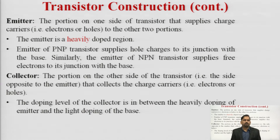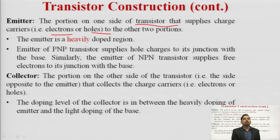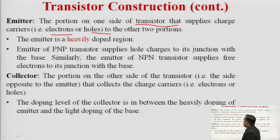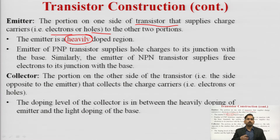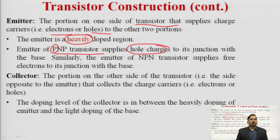In the construction, the emitter terminal is the most important terminal. The emitter basically contains the charge carriers — either electrons or holes — and supplies them to the other portions of the transistor. The emitter is heavily doped because the requirement is that maximum current transfers to the other part. The emitter of a PNP transistor supplies holes, since holes are majority carriers in the P-side, whereas for NPN, electrons are the majority.